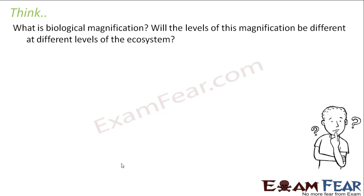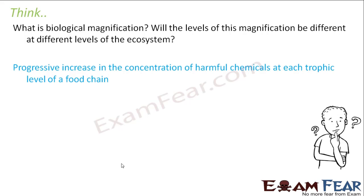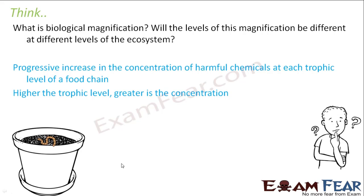What is biological magnification? Biological magnification is the progressive increase in the concentration of harmful chemicals at each trophic level of a food chain. These chemicals are typically non-biodegradable, meaning they won't decompose into simpler forms. As one organism consumes another, the quantity of that chemical keeps increasing — so the higher the trophic level, the higher the concentration of the harmful chemical.